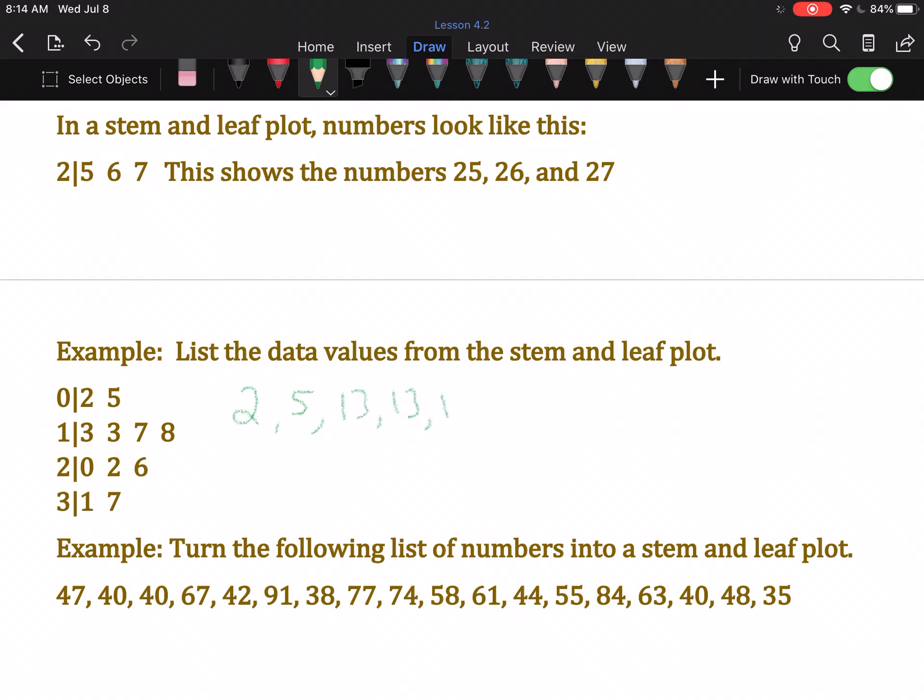Then we have 1, 7 for 17, 1, 8 for 18. 2, 0 is 20, 2, 2 is 22, 2, 6 is 26, 3, 1 is 31, and 3, 7 is 37.